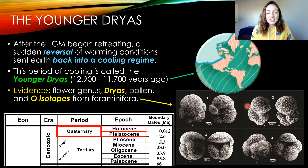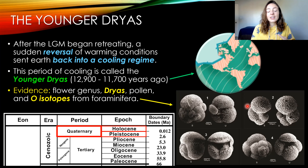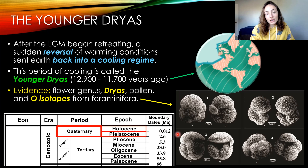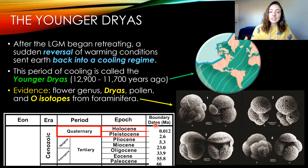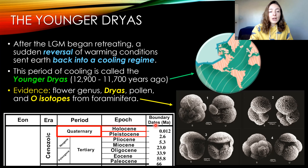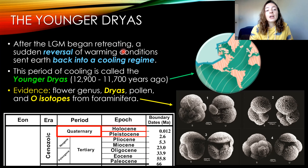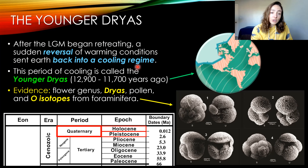Getting right into the Younger Dryas: it is a cool period that occurred around 12,900 to 11,700 years ago. The Holocene began around 12,000 years ago, so this is right at the beginning of the Holocene. After the last glacial maximum around 22,000 years ago, glacial retreat began around 15,000 years ago, and then a sudden reversal of the warming conditions sent Earth back into a cooling regime.